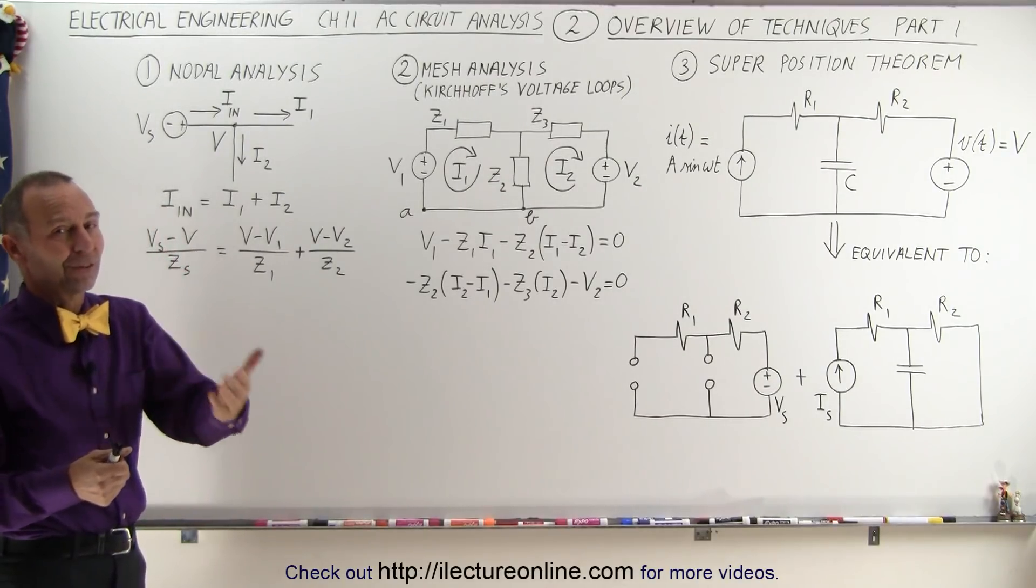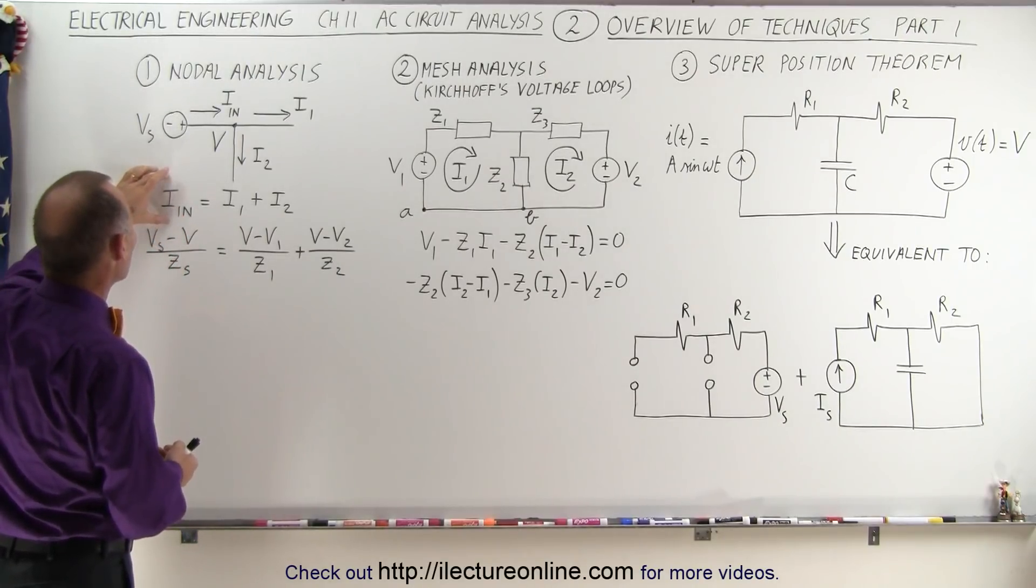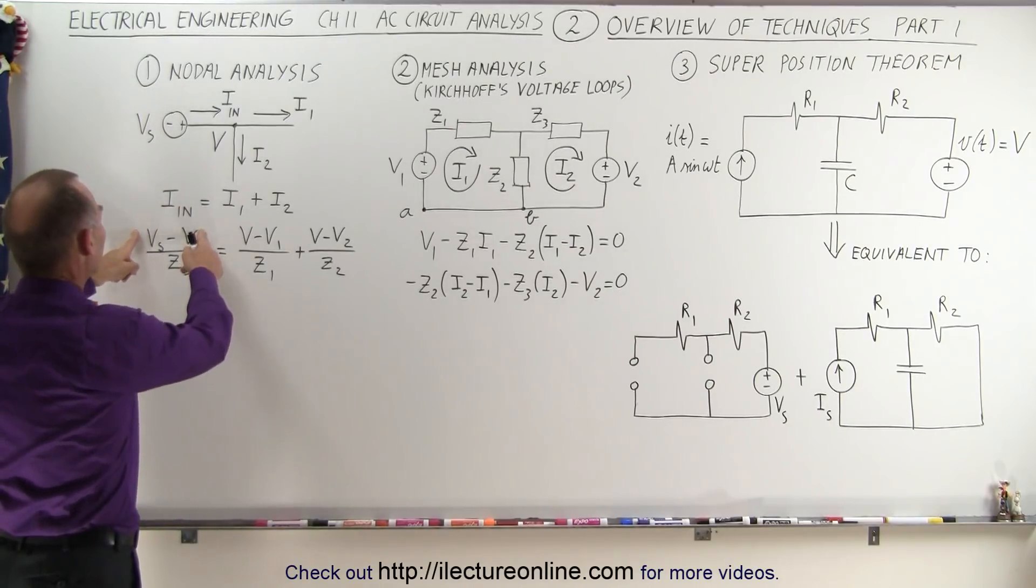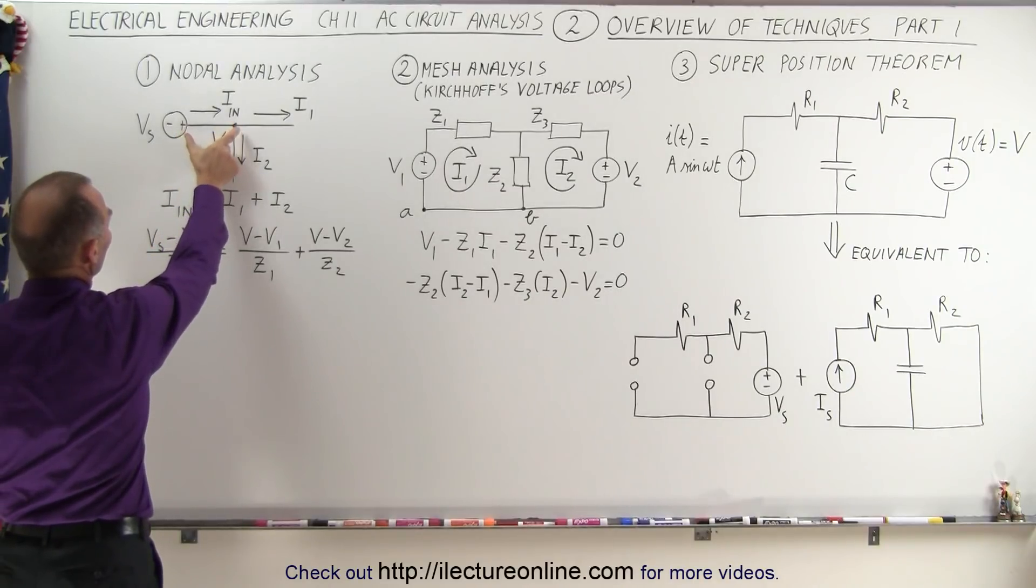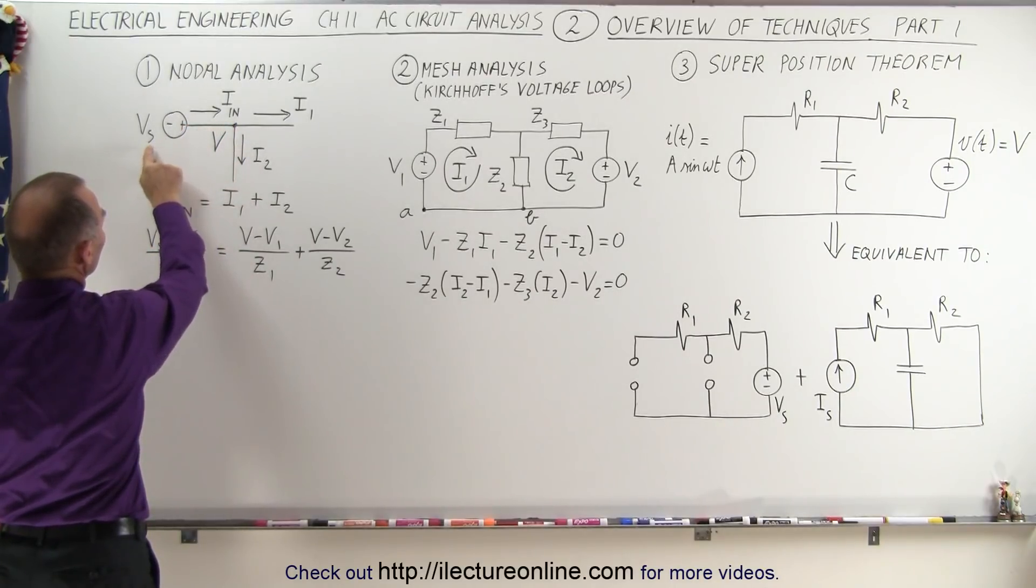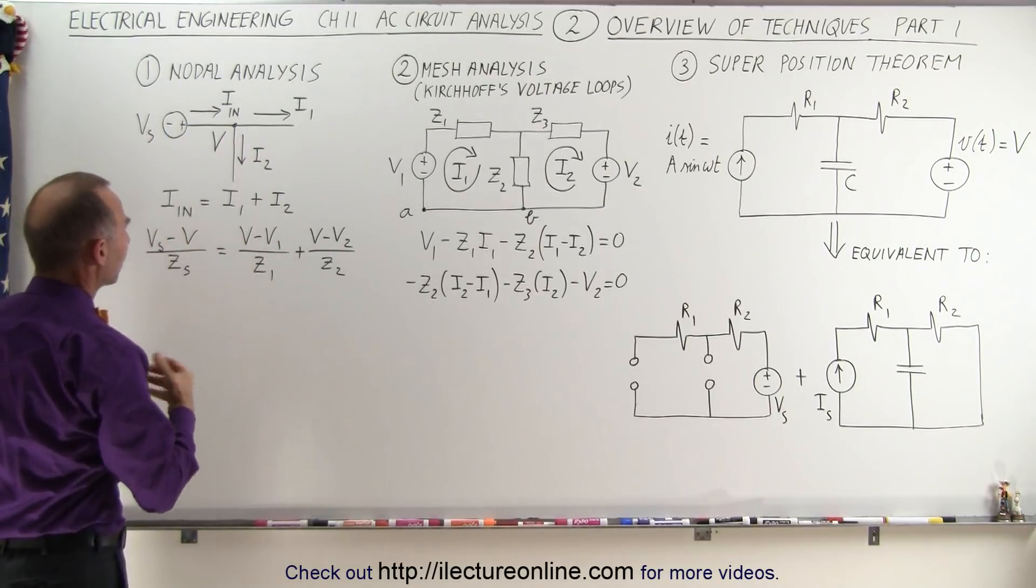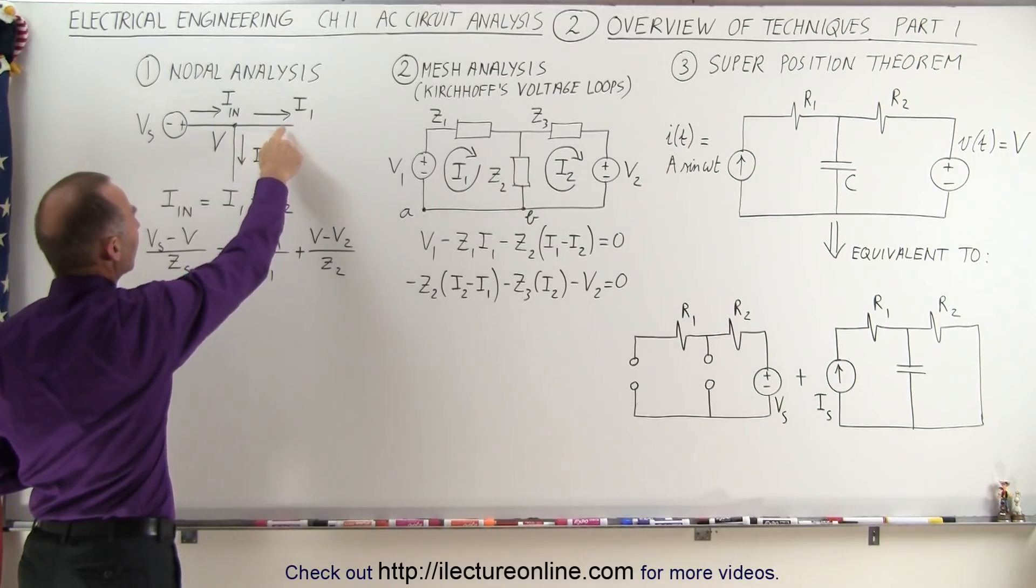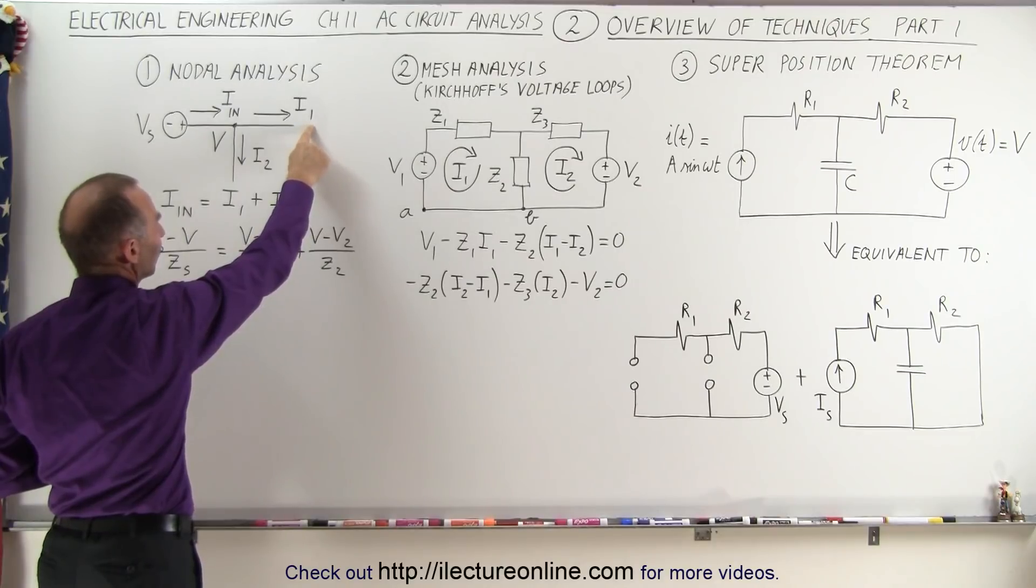We also need to realize, using Ohm's Law, that a current can be calculated by taking the voltage divided by the impedance. In this case, the input current will equal the difference of the voltage of the source and the voltage at the node divided by the impedance on that branch. The current leaving, I1, will equal the difference between the voltage at the node and the voltage at the end of this branch, whatever that may be, let's call it V1. The difference of those two voltages divided by the impedance on that branch will be the current leaving the node.